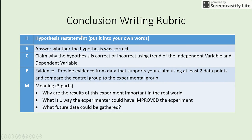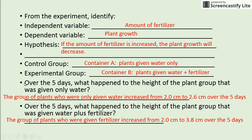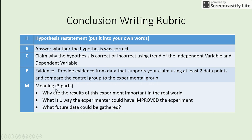We're going to break the conclusion into five different parts using the HACEM structure. H is restating the hypothesis in your own words. A is adding a sentence about whether the hypothesis was correct or not. C is making a claim about why the hypothesis was correct or incorrect. E is providing evidence — at least two data points from the table comparing the control and experimental groups. And M is the meaning: why is the experiment important? We'll cover why the results matter to the real world, one way to improve the experiment, and what future data could be gathered.